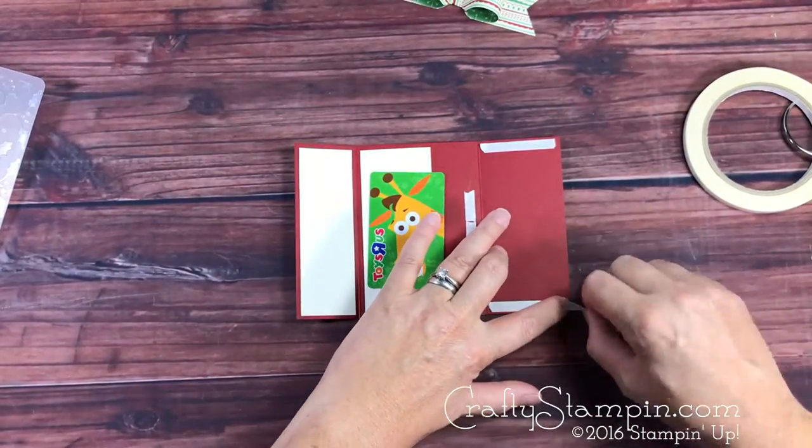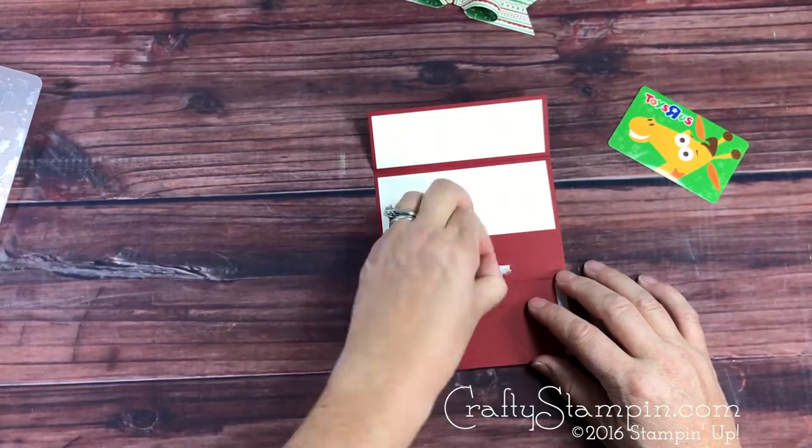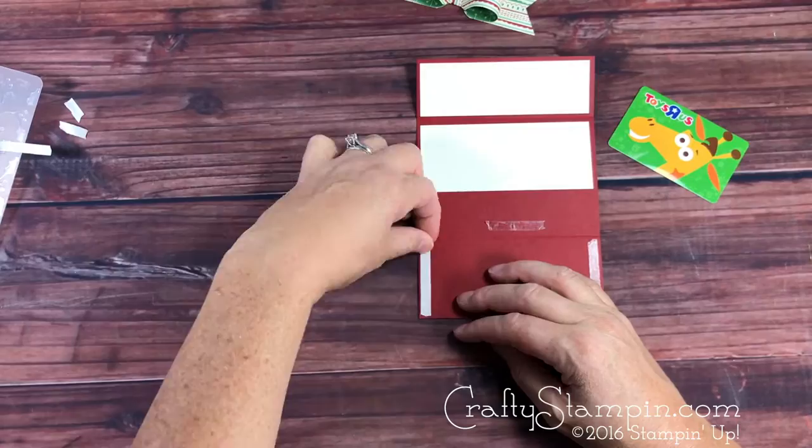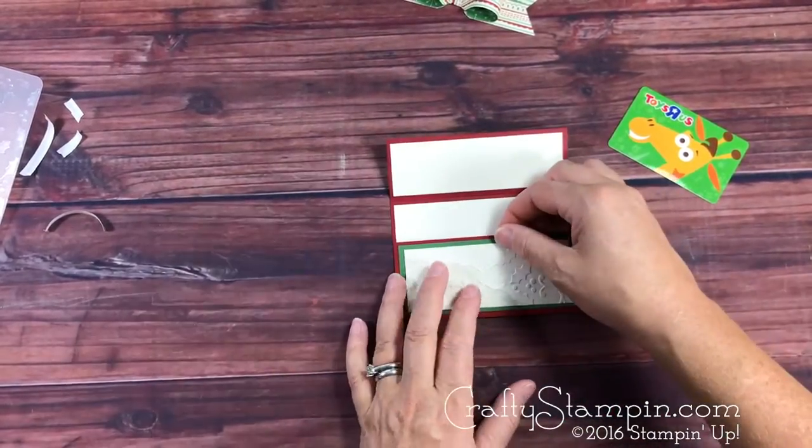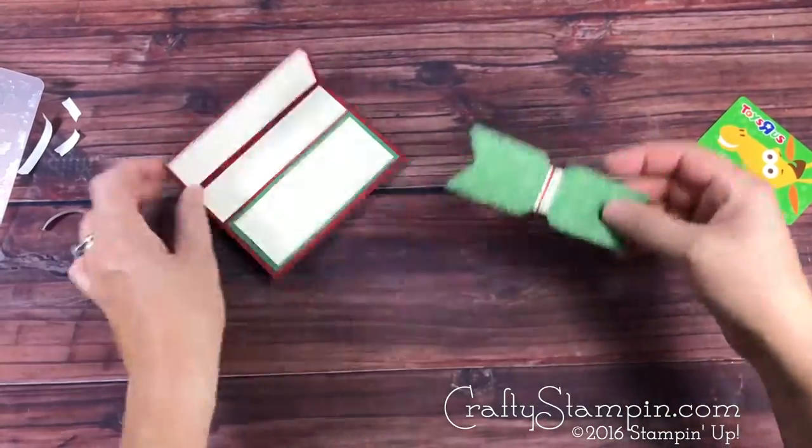Add the tear tape to both sides and then peel off your backings before you close it. Bend the card in a little bit in the middle. This makes it easier to get the card in and out.